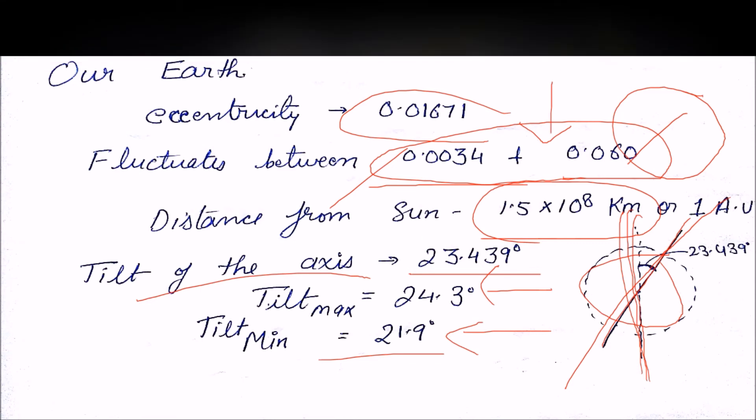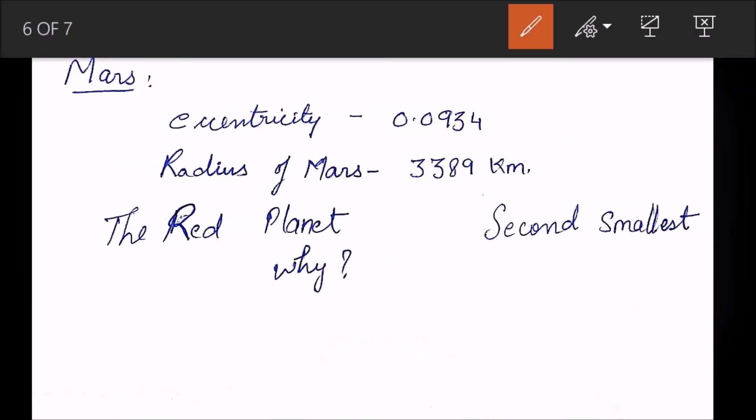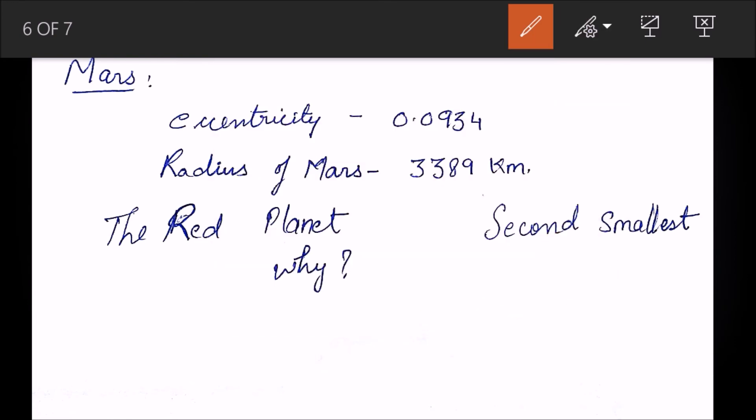Mars is the planet we are trying to reach. As you all know, India has sent Mangalyaan 1 and is preparing to send Mangalyaan 2. The eccentricity is 0.0934. The radius is 3,389 kilometers, which is almost half the radius of Earth. This is called the Red Planet because it appears red in color, but the reason is that the surface is made up of iron oxide.